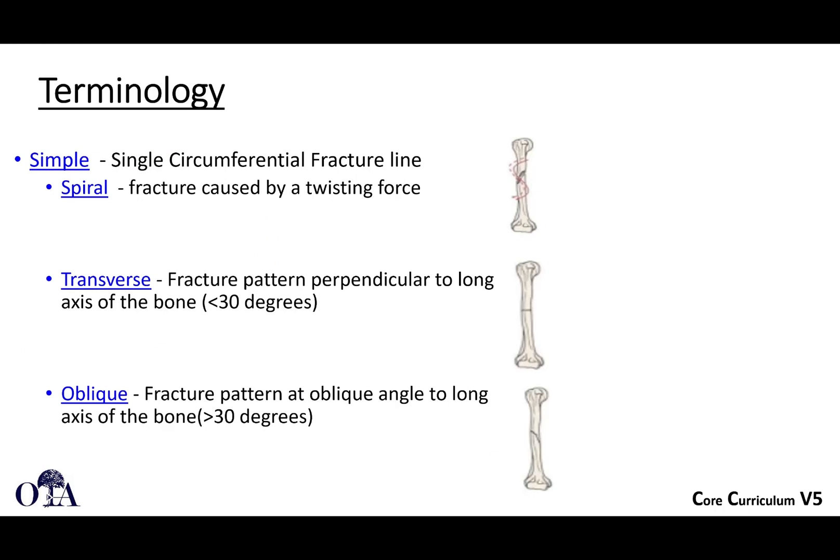Getting back to fracture patterns, a simple fracture just means there's one main fracture line. It could be spiral, it could be transverse — a straight line coming across — or oblique, as shown here. So those are our transverse, oblique, and spiral fracture patterns, which are different types we'll use to describe simple fractures.